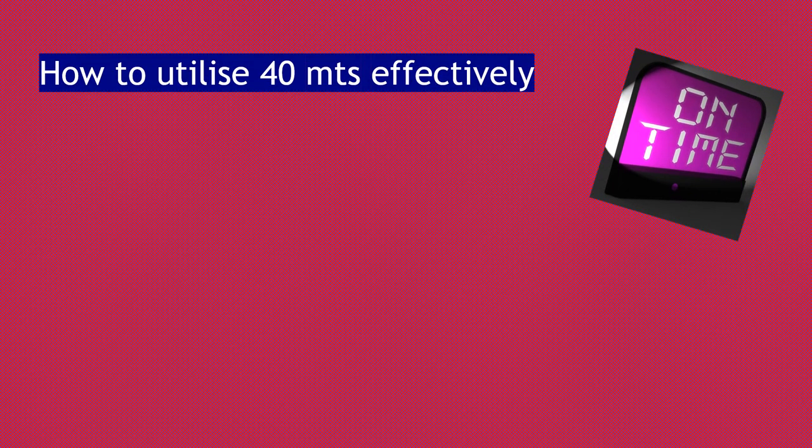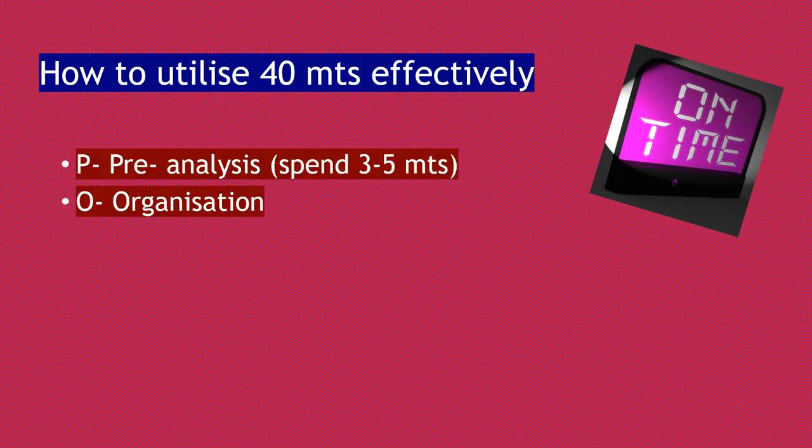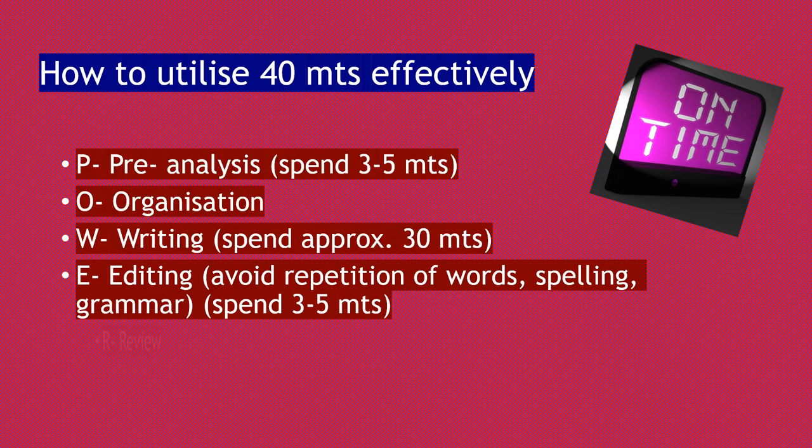Now, how to utilize your 40 minutes effectively. Always remember the word POWER. P is for pre-analysis — spend the first three to five minutes making your notes and points. O is organization — once you have made enough points, make sure you prioritize them. W is writing — spend approximately 30 minutes. After you're done writing, spend three to five minutes on editing. Check that you're not repeating words, use effective synonyms, check your spellings and grammar, and do a final review.